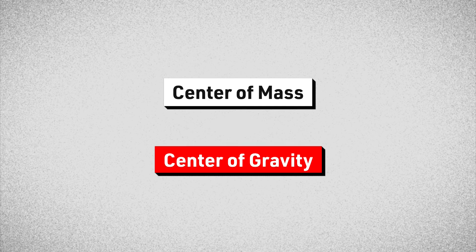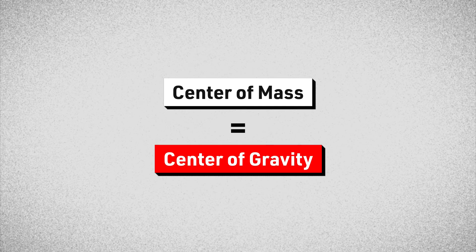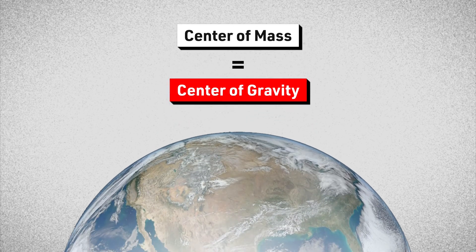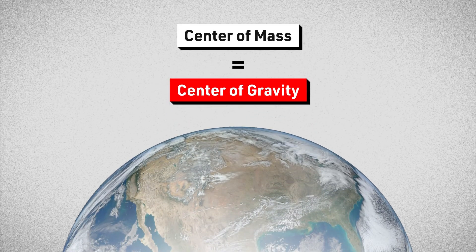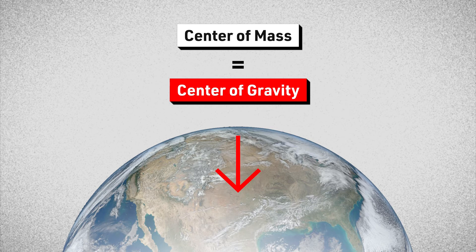Another related concept that you may have heard is the center of gravity. These two terms are usually used interchangeably, and that is because in a uniform gravitational field, like the Earth's surface, the center of mass and center of gravity are at the same position.